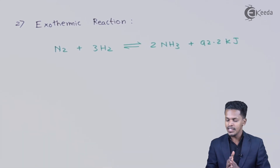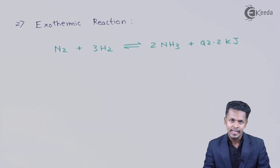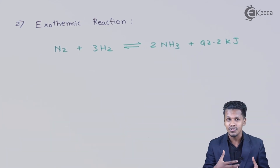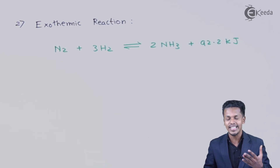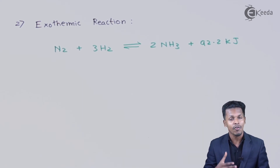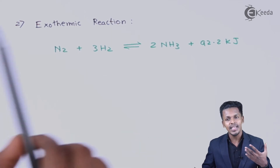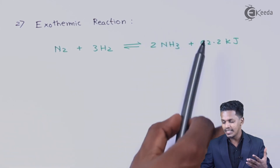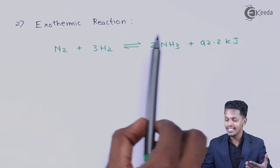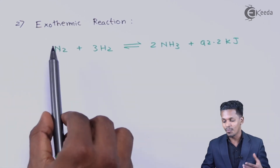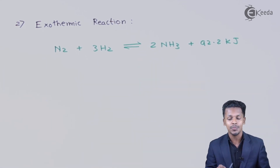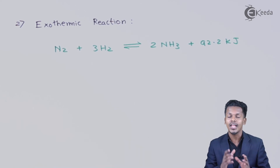The energy released during the formation of two moles of ammonia has been found to be 92.2 kilojoules, making it an exothermic reaction. If we increase the temperature, the reaction is already producing heat. According to Le Chatelier's principle, the system will try to relieve the stress — so the reaction will favor the backward direction, giving us N₂ and 3H₂ back instead of two moles of NH₃.